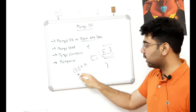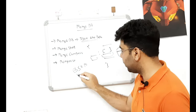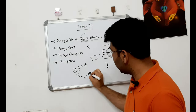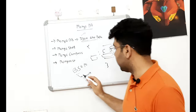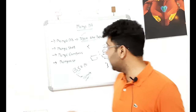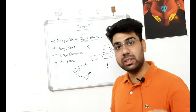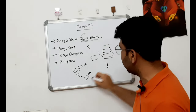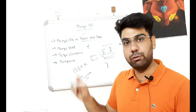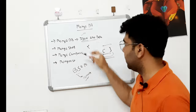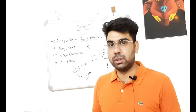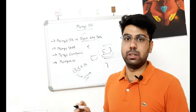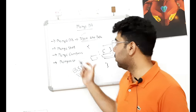B in BSON stands for Binary. So JSON-like doesn't mean the data is stored in plain JSON key-value format. It is actually stored in binary format, then converted into JSON and stored in MongoDB. That's why we call it JSON-like data, not JSON data.